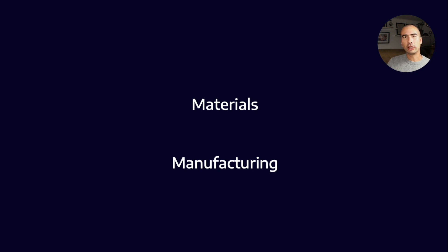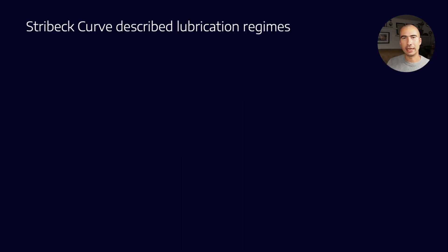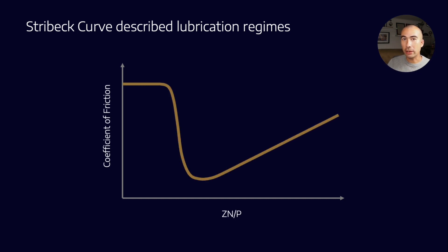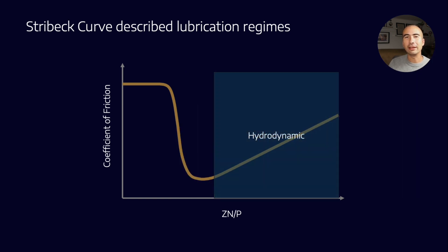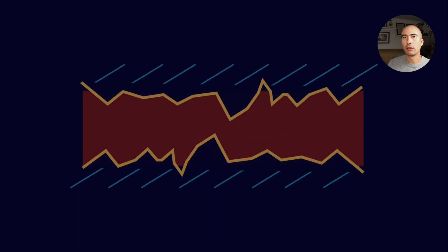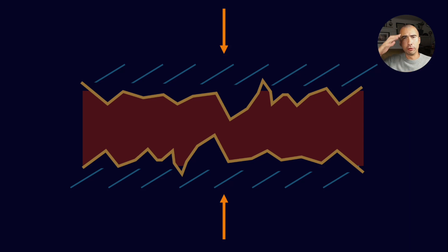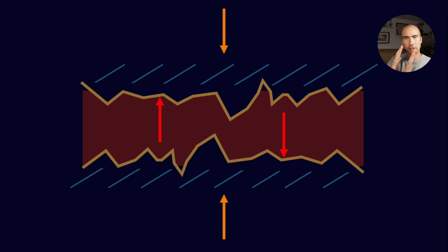In order to understand this, we need to go back to our trusty friend the Stribeck curve, which talks about those three lubrication regimes: boundary, mixed, and hydrodynamic. In an ideal scenario with gears, we want to be in the hydrodynamic lubrication regime. What that means is that there is sufficient film thickness to completely separate the two gear surfaces. As two gears mesh together, there's a normal force trying to squeeze those surfaces together, so the fluid film has to develop sufficient internal pressure to exert an equal and opposite force back on those gear teeth to separate them.